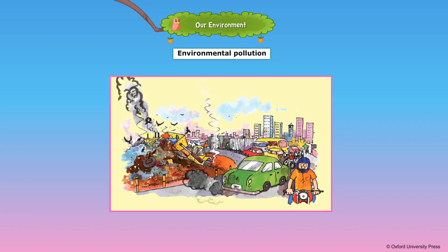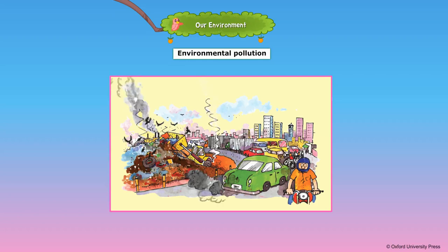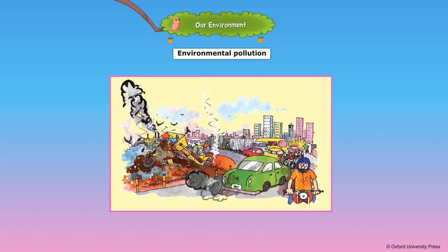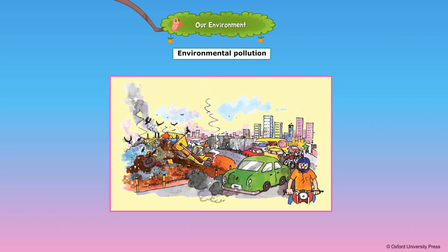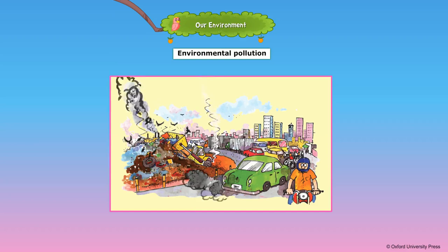Cleanliness of the environment is very important. The opposite of cleanliness is pollution. Pollution can occur in many ways and in many places. For example, smoke from factories and vehicle exhausts pollute the air. There can be pollution of the air, water or land.